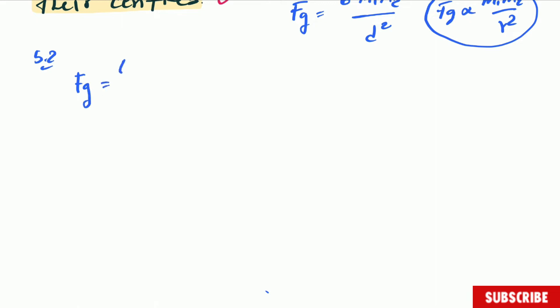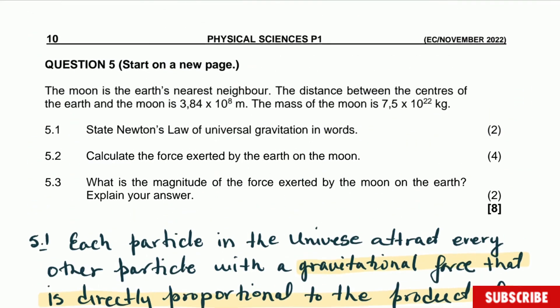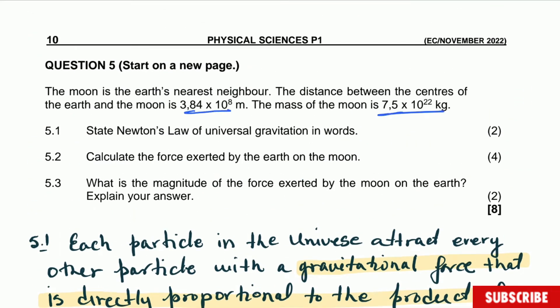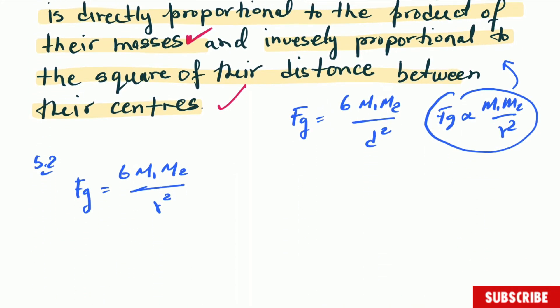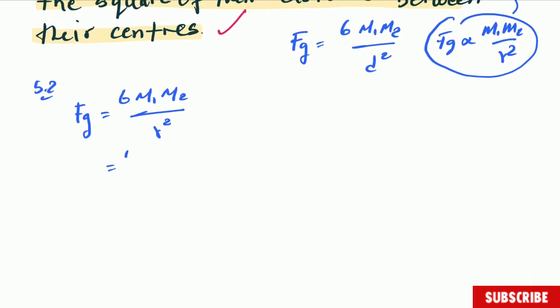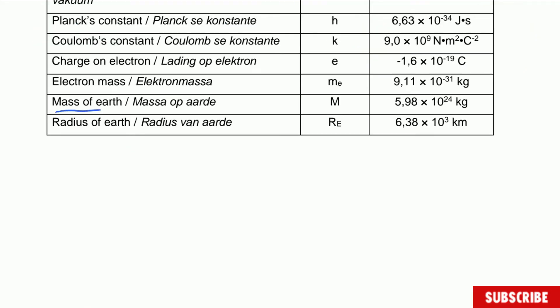FG is equal to capital G multiplied by M1 and M2 divided by the distance between the centers squared. And everything is given to us here. It's a very small question, so we don't need to write the data there. So G is going to be equal to 6.67 times 10 to the minus 11. And something important as well, here in the data is the mass of the earth.